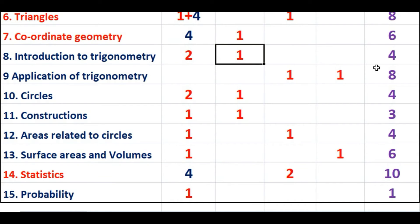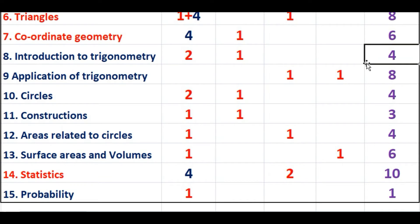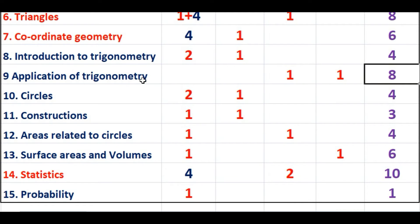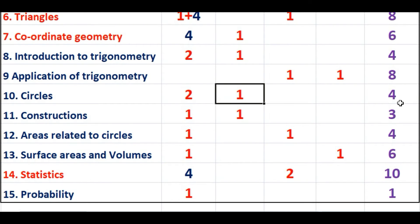From Trigonometry, two questions of one mark and one question of two marks, so a total of four marks will be asked. Usually in previous years, at least eight marks were asked from Trigonometry, but this time the weightage has been reduced. From Application of Trigonometry, one three-mark question and one five-mark question, so a total of eight marks is asked.